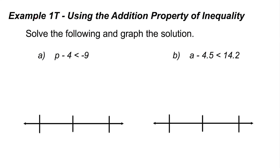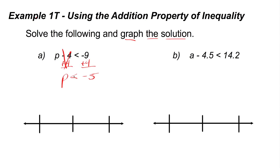Example 1, part a, using the addition property of inequality. We're told to solve the following and graph the solution. To solve p minus 4 is less than negative 9, we use the addition property of inequality to undo the subtract 4 on the left. So we add 4 to both sides. The 4s cancel, leaving p isolated. Bringing down the less than symbol and computing negative 9 plus 4 gives negative 5. So the solution is p is less than negative 5.